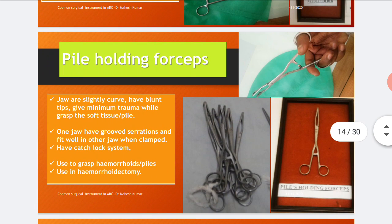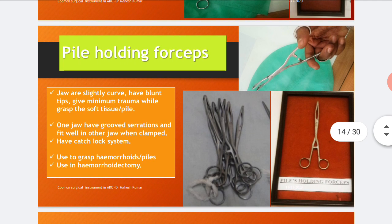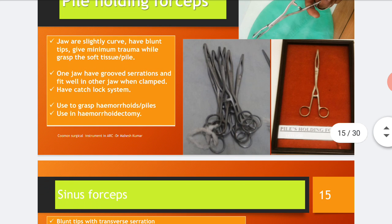The pile holding forceps are slightly curved with blunt tips, giving minimum trauma while grasping soft tissue like piles. One jaw has groove serrations and fits well in the other jaw when clamped. It has a catch lock system and is used to grasp hemorrhoids or piles and during the operation for hemorrhoids, that is hemorrhoidectomy.